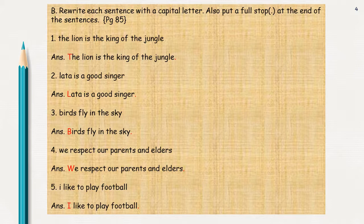Rewrite each sentence with a capital letter. Also put a full stop at the end of the sentences. Children, this exercise is from page number 81 of your English grammar book. This is Exercise B. In this exercise, the questions are given, and the first letter of every sentence is a small letter and at the end, a full stop is not put. So you have to rewrite each sentence with a capital letter and put a full stop at the end of the sentence.